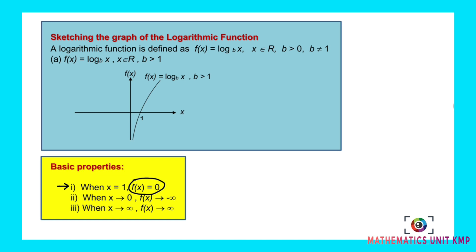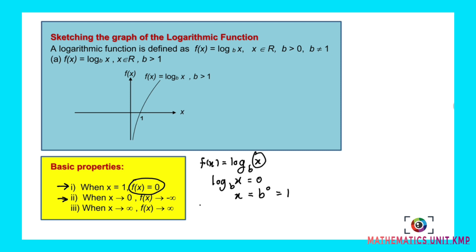For example, f(x) equals log base b of x. So log base b of x equals 0. You need to find the value of x: x equals b to the power of 0, so x equals 1. When x equals 1, the value of y is 0 — that is the first step. The second step is you find the vertical asymptote. The vertical asymptote — VA stands for vertical asymptote — is x equals 0.